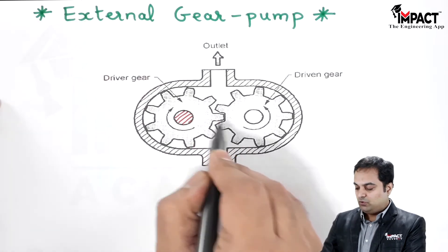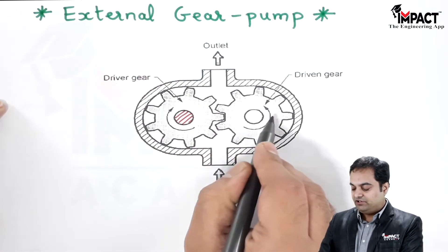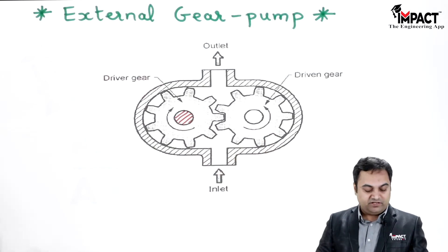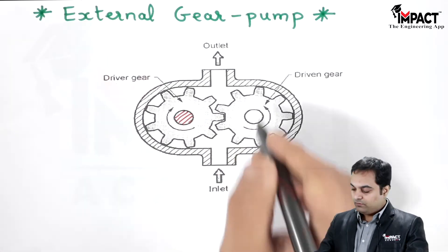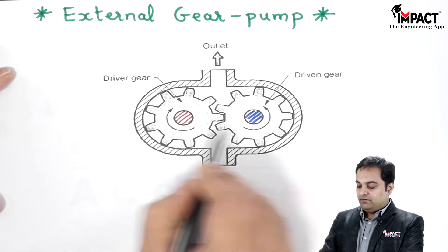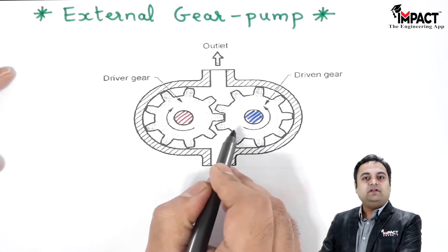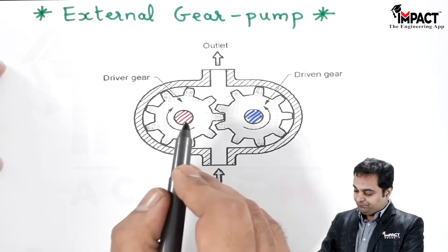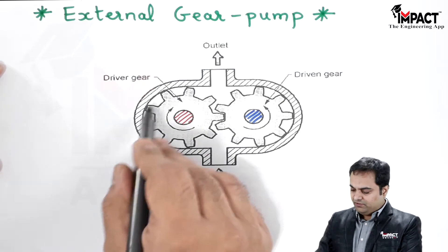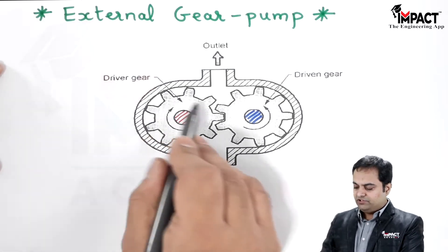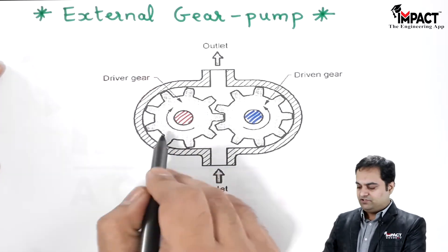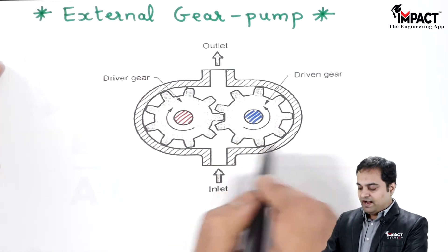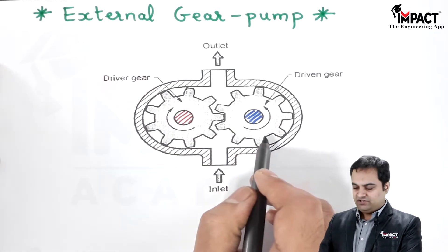Since the driver gear is in mesh with the driven gear, it will drive the driven gear as well. Because this is an external gear pump arrangement, when one gear rotates in the clockwise direction, the other one rotates in an anti-clockwise direction.